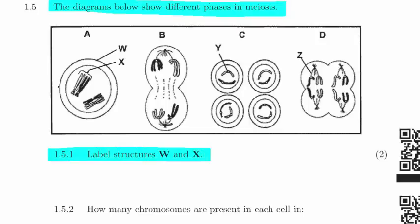If we look at W, W is this part right on the outside over here. It can only be one thing, and that is the cell membrane, the membrane that surrounds the whole cell.